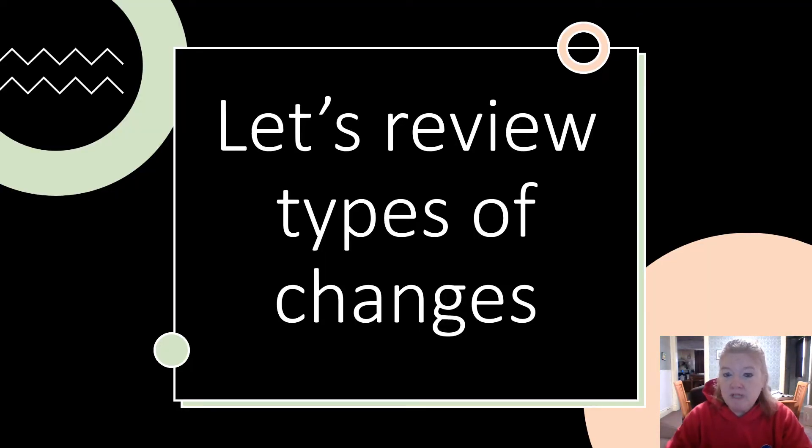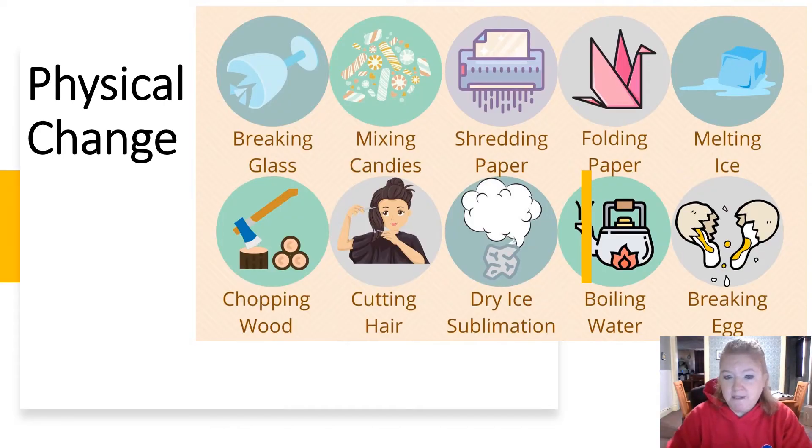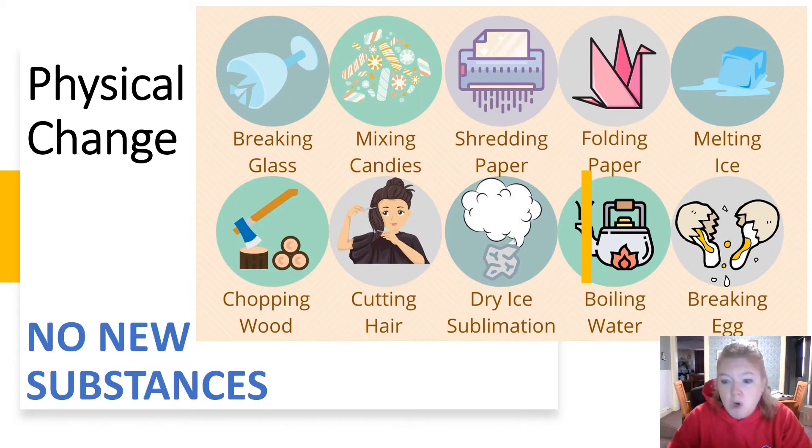Let's review types of changes. So we have physical changes. No new substances are formed. So you break an egg, no new substance. You melt ice, no new substance. You mix candy together, no new substances. Physical change.